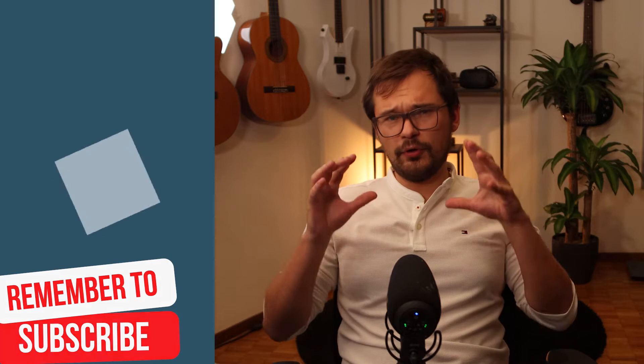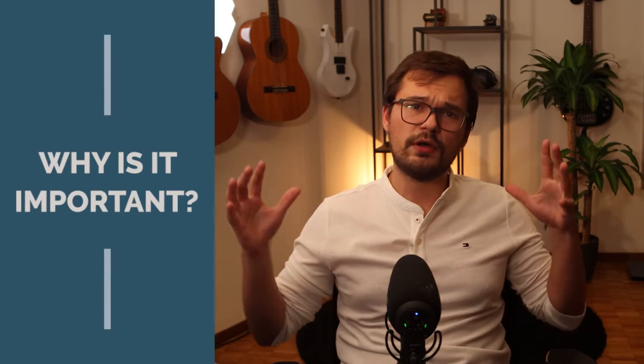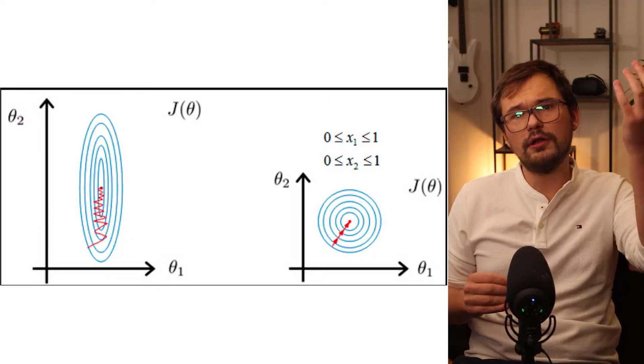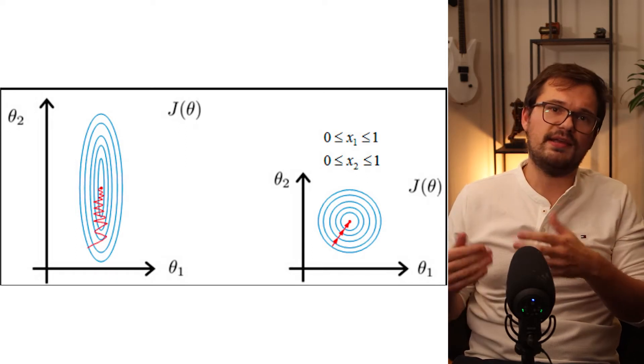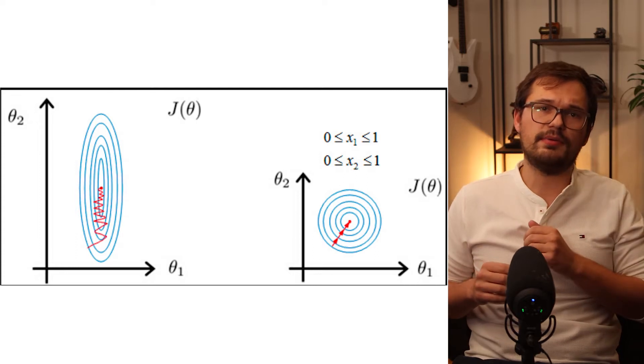Why is feature scaling important? Two main reasons. One: some algorithms just work and perform better when the data is scaled. And two: many algorithms converge much faster when the data is scaled. Consider neural networks and how gradient descent performs. On the left we can see intuitively that the path to the global minimum is much longer than the path on the right with feature scaling. Since speed is crucial, make sure to scale all your numerical variables.